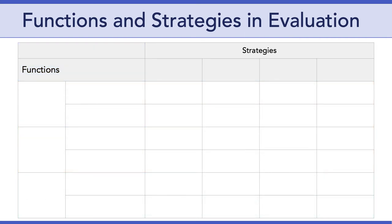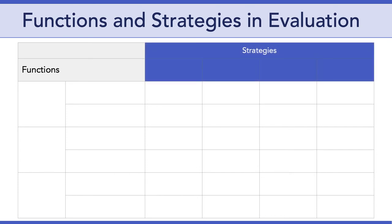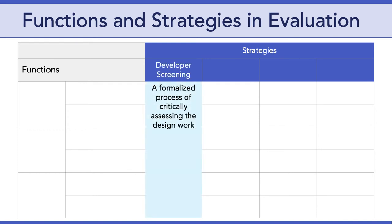Recall that this is a matrix involving functions and strategies. So far, we've looked at six functions across three stages of testing. Now let's take a look at different evaluation strategies. McKinney and Reeves argue there are four basic strategies used in design research. These strategies should be thought about before selecting specific research methods. The first strategy is developer screening, a formalized process of critically assessing the design work. This usually involves bringing in someone from outside to facilitate the screening process, which allows the whole design and development team to participate. Having an outside facilitator can encourage everyone to engage more critically and bring increased objectivity to the process. Common methods that go with this strategy include focus groups, questionnaires, or checklists.